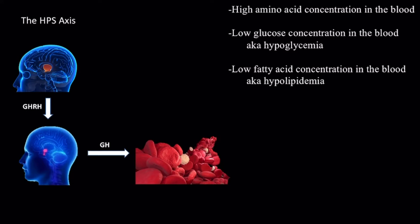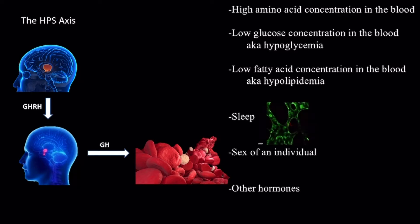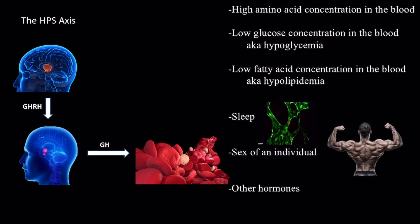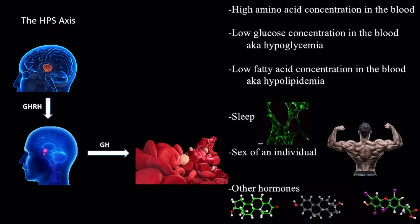In addition to these factors, sleep, the sex of an individual, and other hormones can all impact the production of hormones of the HPS axis. For example, GHRH production increases during deep sleep, which is when tissue rebuilding occurs. Males tend to have higher GHRH production, hence larger body size on average compared to females. Other hormones, like testosterone, estradiol, and thyroid hormones, increase GHRH production.